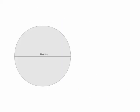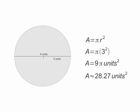So, what is the area of this circle? The diameter is 6, so we'll divide that by 2 to get a radius of 3 units. This circle's area is 9 pi, or approximately 28.27 square units.